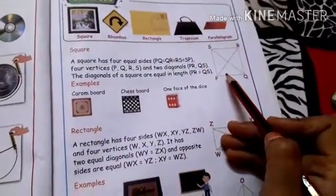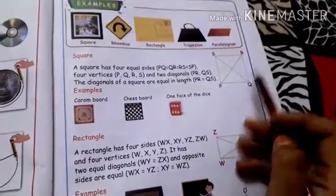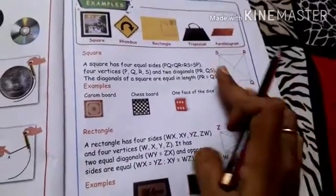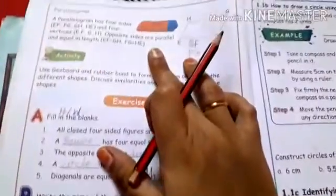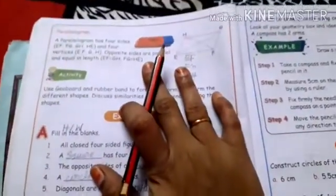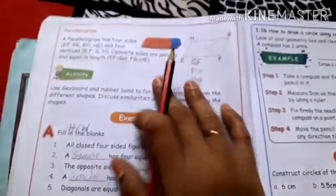So all closed four-sided figures are called quadrilaterals. Square, rectangle, rhombus, and parallelogram — everything is a quadrilateral.